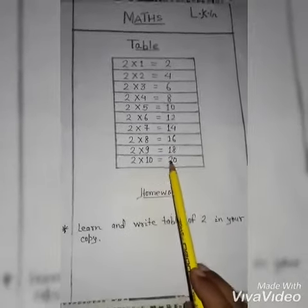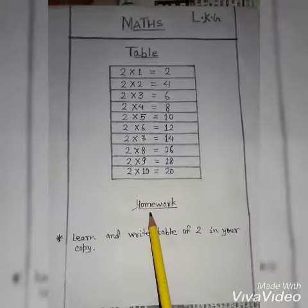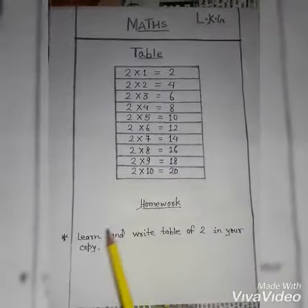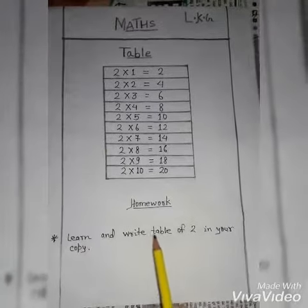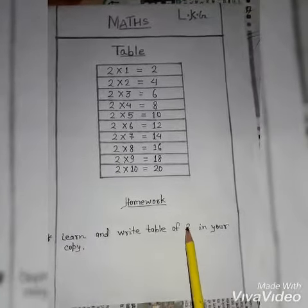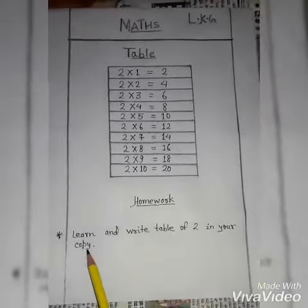2×10=20. And this is your homework: learn and write table of 2 in your copy.